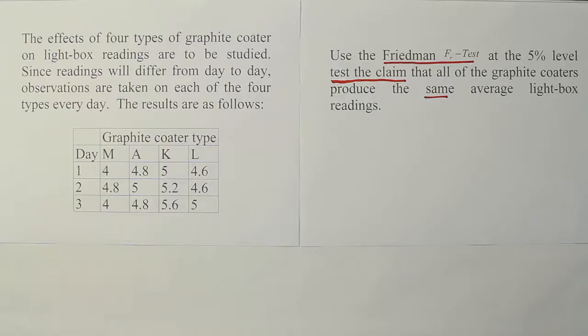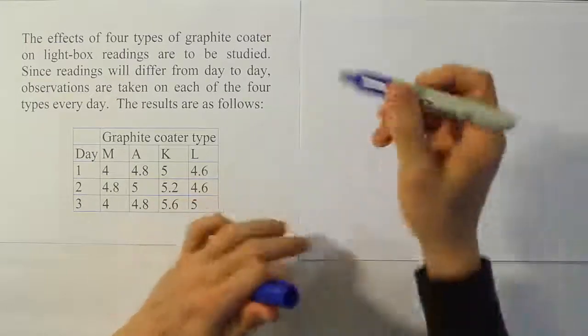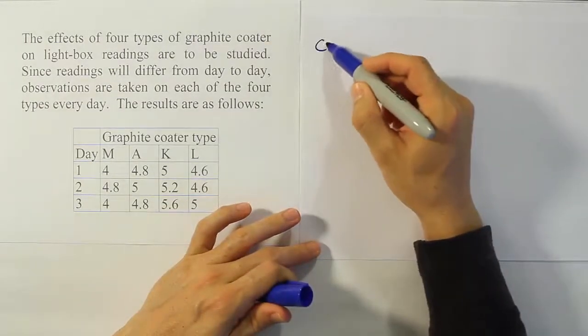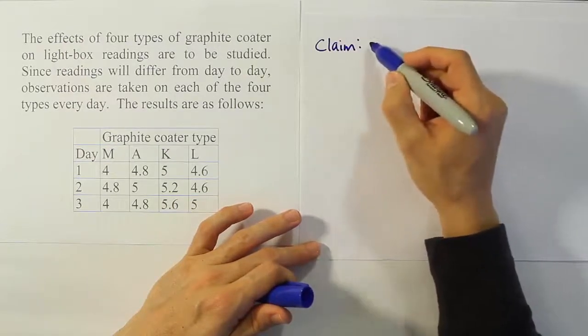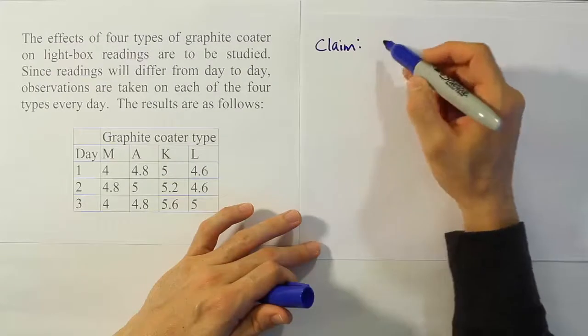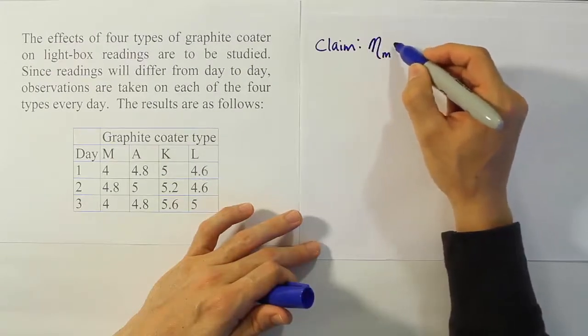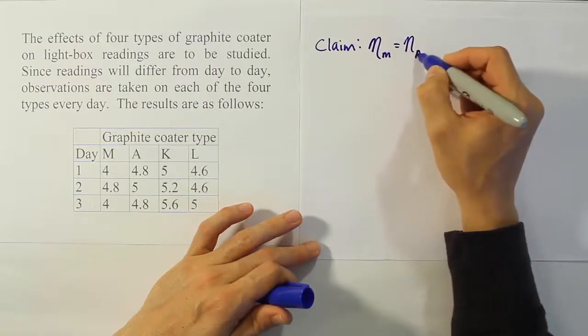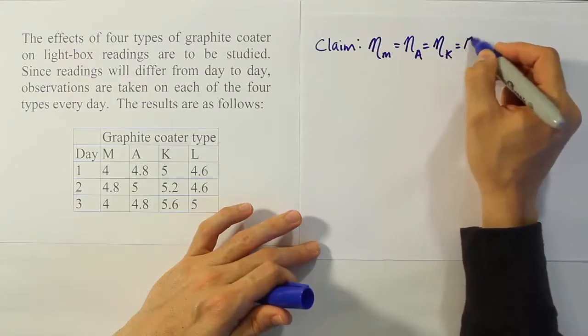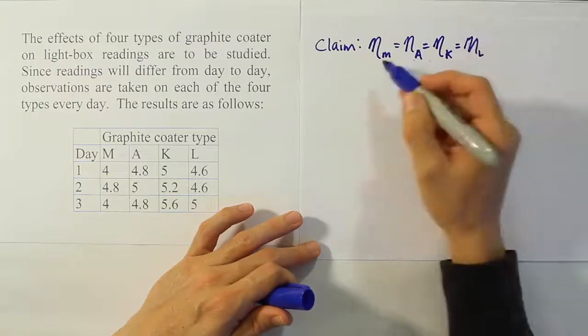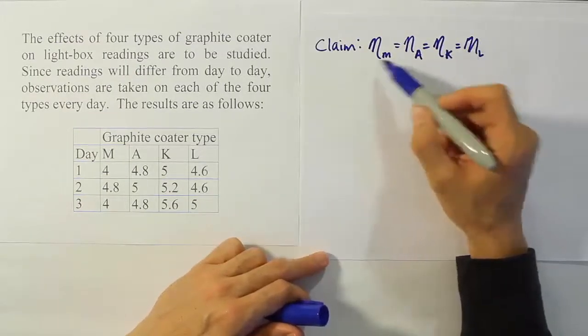Okay, so let's go ahead and start by writing out that claim in symbols. So the claim is going to be very similar to the last problems that we dealt with, the Kruskal-Wallis type claim. We're simply going to say that the median, since it said there that all of them produce the same value, we're going to say the claim is that the median for the graphite coater M is equal to the median for the graphite coater A, is equal to the median for graphite coater K, is equal to the median for graphite coater L. So all the medians are the same.